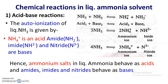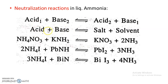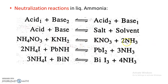For neutralization reactions in liquid ammonia, acid reacts with base to form salt and solvent. For example, NH4NO3 (ammonium nitrate) produces ammonium ion and therefore acts as an acid, while potassium amide produces amide ion and acts as a base. Acid reacts with base to form KNO3 as salt plus ammonia as solvent. This is the neutralization reaction.